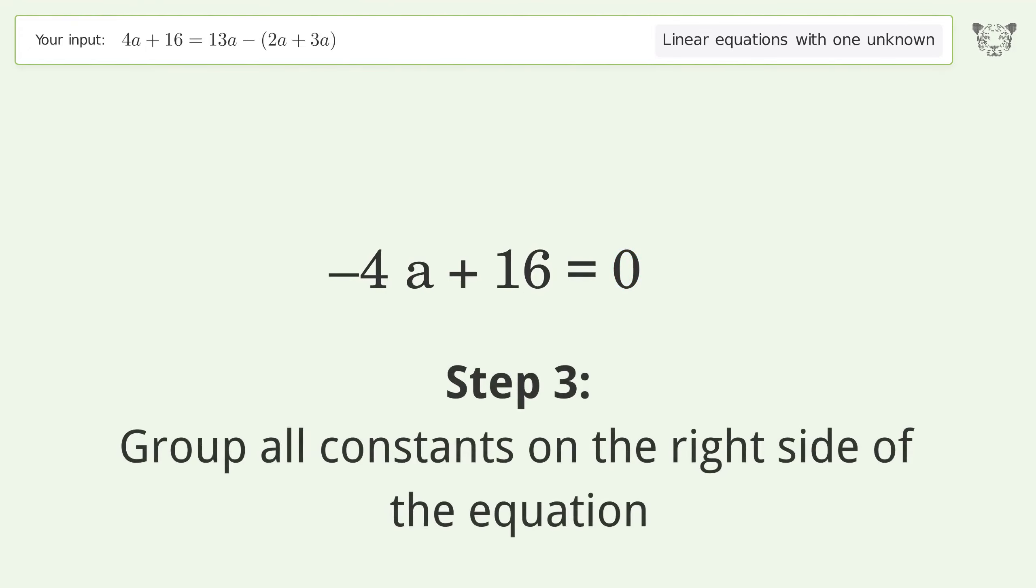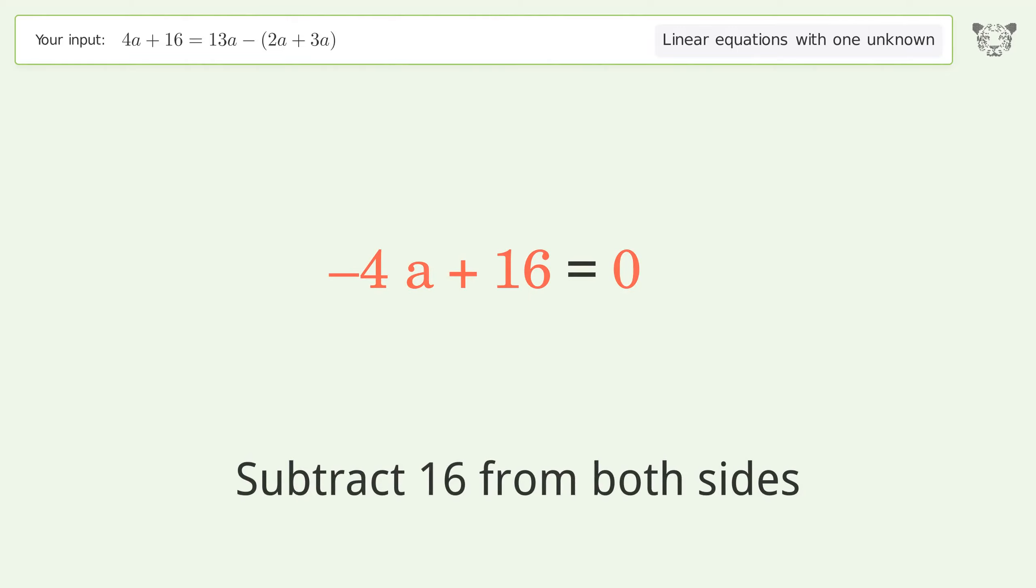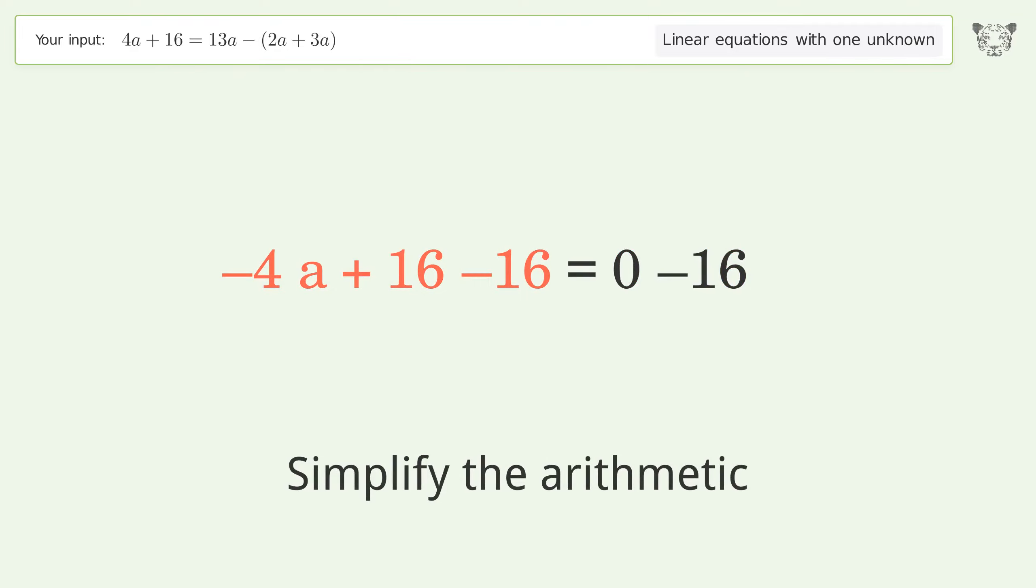Group all constants on the right side of the equation. Subtract 16 from both sides. Simplify the arithmetic.